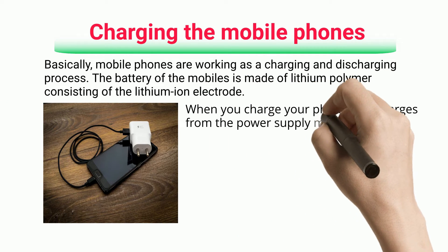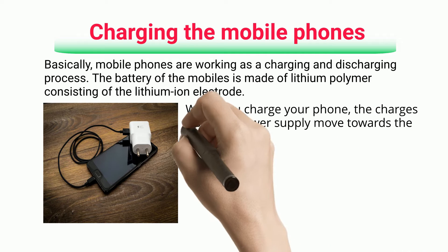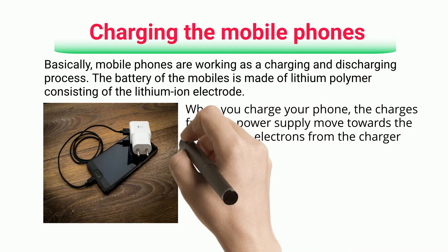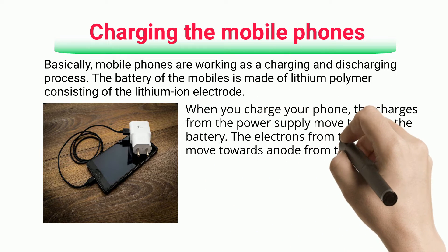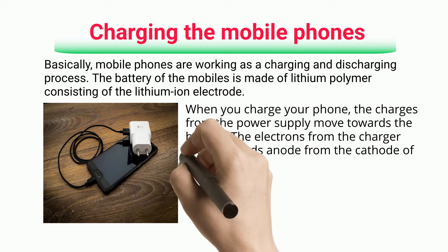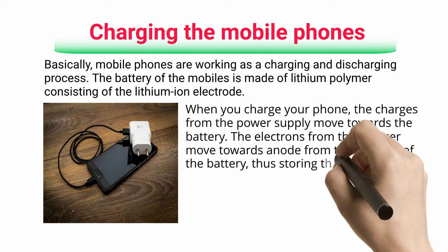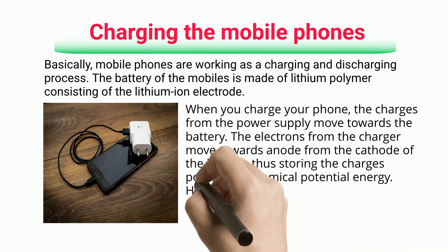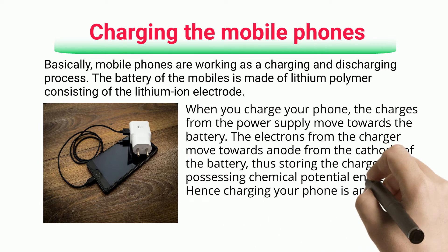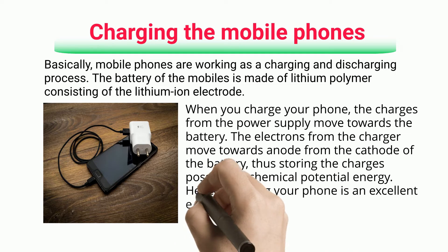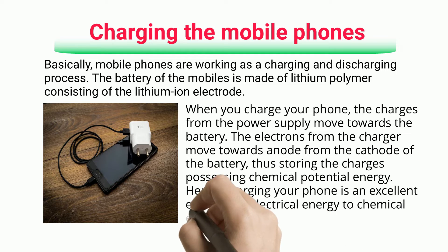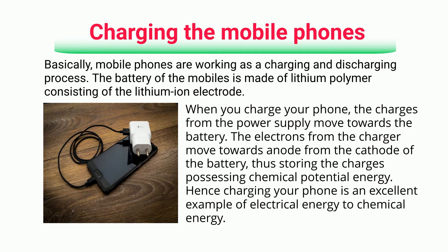When you charge your phone, the charges from the power supply move towards the battery. The electrons from the charger move towards the anode from the cathode of the battery, thus storing the charges possessing chemical potential energy. Hence, charging your phone is an excellent example of electrical energy to chemical energy.